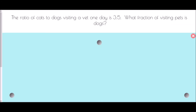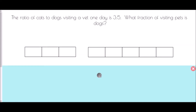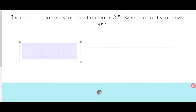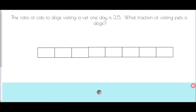The ratio of cats to dogs visiting a vet one day is 3 to 5. What fraction of visiting pets are dogs? I'll draw a bar with three blocks for cats and five blocks for dogs, combined into a single bar of eight blocks total. Three blocks are cats and five are dogs. So the fraction that are dogs is five-eighths.